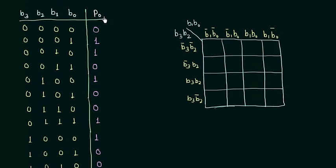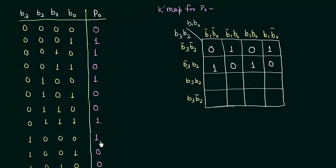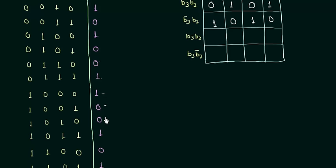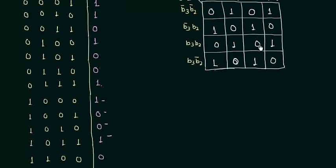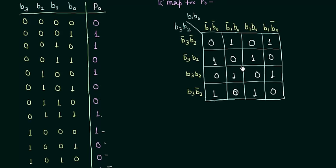Now we fill the parity bit values into the K-map for P0: 0, 1, 1, 0 — then 1, 0, 0, 1 — then 1, 0, 0, 1 — and the last four are 0, 1, 1, 0. You can see a different type of K-map in which each and every one cannot be grouped with 2 ones, 4 ones, or 8 ones. All the ones must be grouped alone.